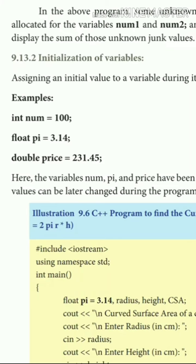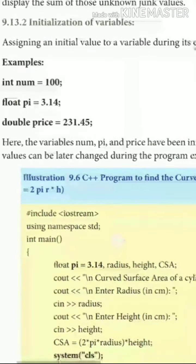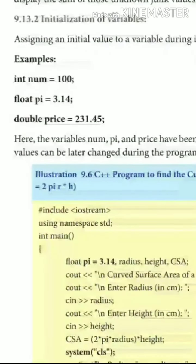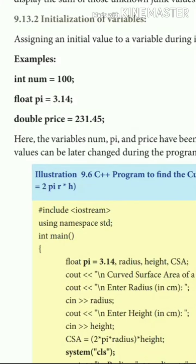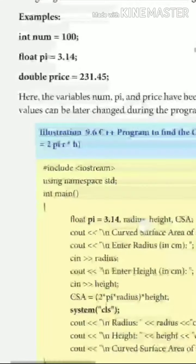For example, you can see that: int num = 100. Here, int is the data type, num is the variable name, and 100 is the value which is assigned to this variable. In memory, the space named num will have 100 stored inside it.